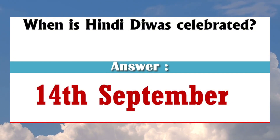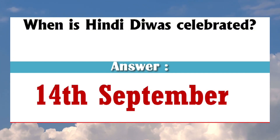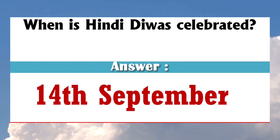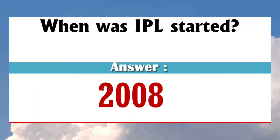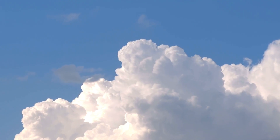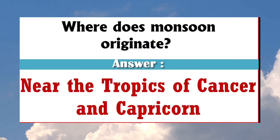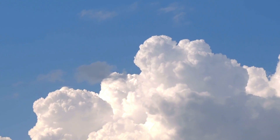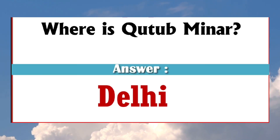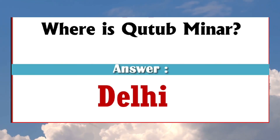When is Hindi Divas celebrated? 14 September. When was IPL started? 2008. Where does monsoon originate? The Bay of Bengal. Where is Qutub Minar? Delhi.